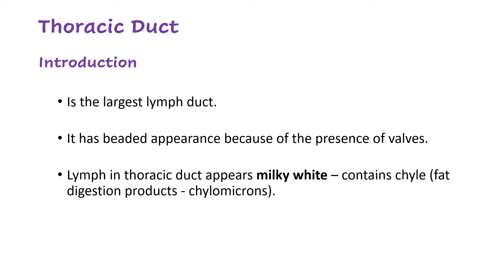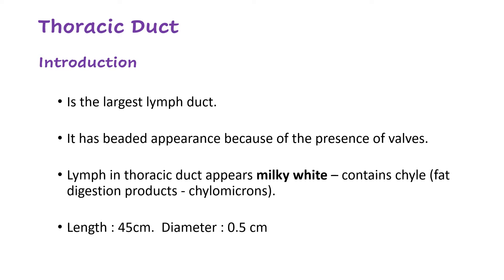Lymph in the thoracic duct has a milky white appearance because of the presence of chyle, which consists of fat digestion products known as chylomicrons. These reach the thoracic duct from intestinal lymph vessels that absorb fat by-products. The length of the thoracic duct is approximately 45 centimeters and the diameter is half a centimeter.